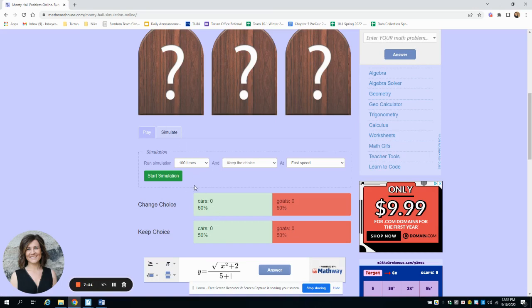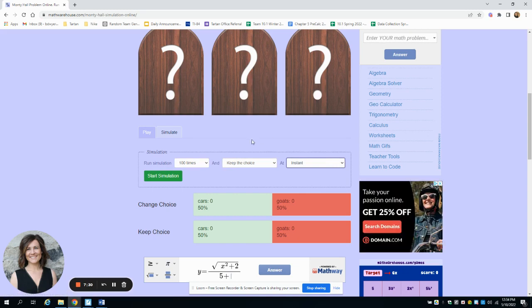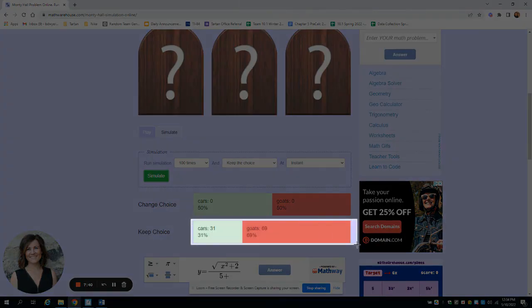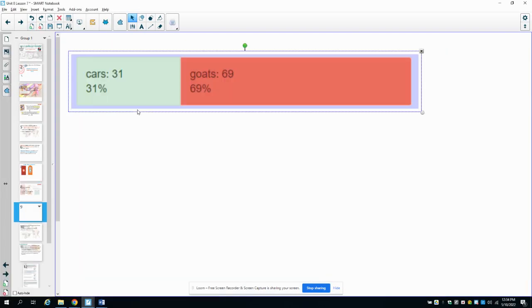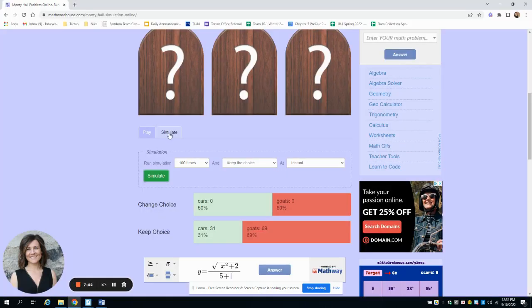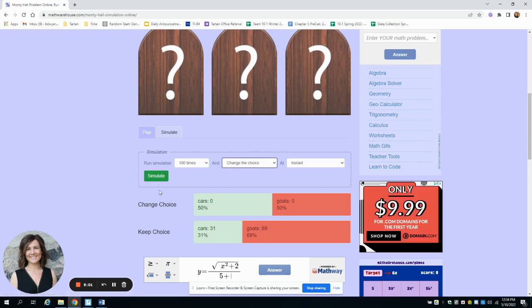All right. So I'm going to do a simulation here of if we do this a hundred times and we keep the choice. So let's do an instant. We're going to play this game, select a random door and keep the choice and see how many times we win and how many times we lose. So here's the results. I'm just going to take this and put it into our lesson to record the results. All right, then let's do this again and let's do it if we change the choice. So right now we won 31% of the time and we lost 69% of the time.